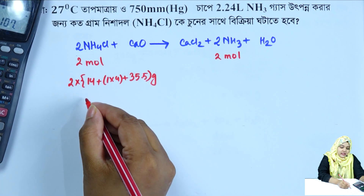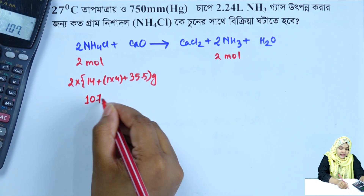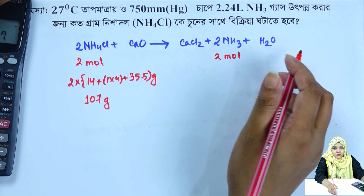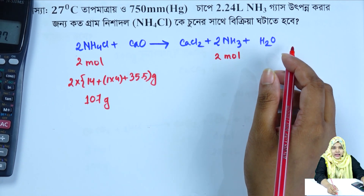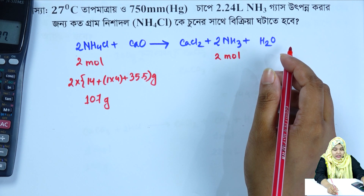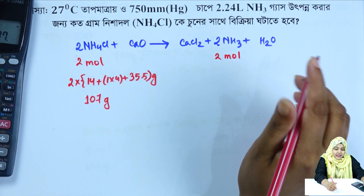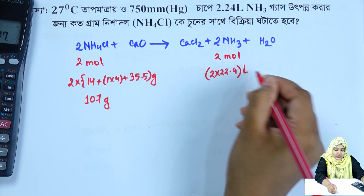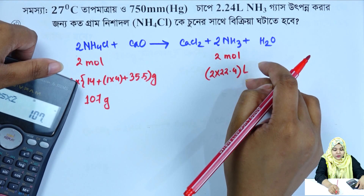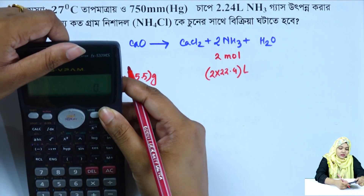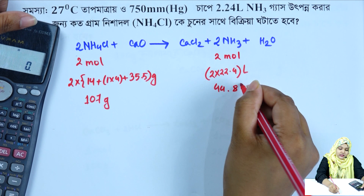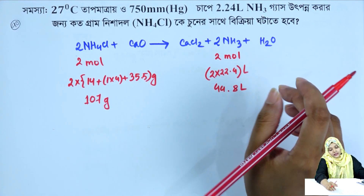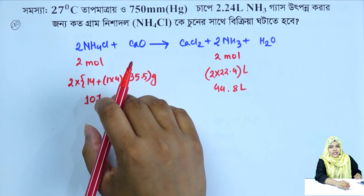2 mol ammonium chloride is 107 grams. So 2 mol ammonium chloride gives 44.8 litres of ammonia gas at STP.